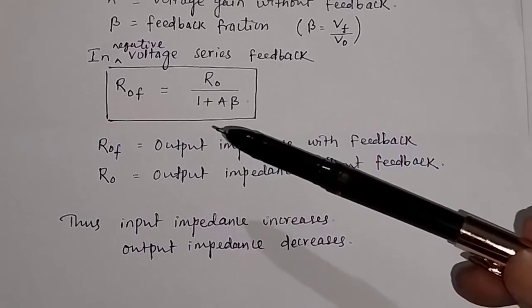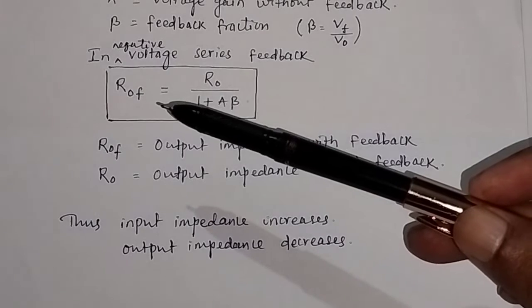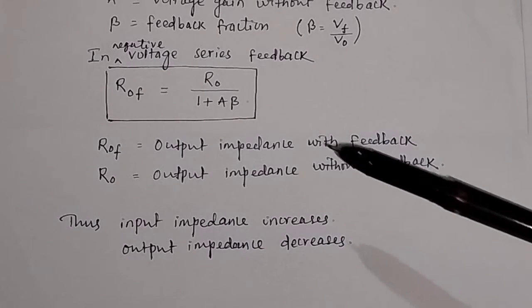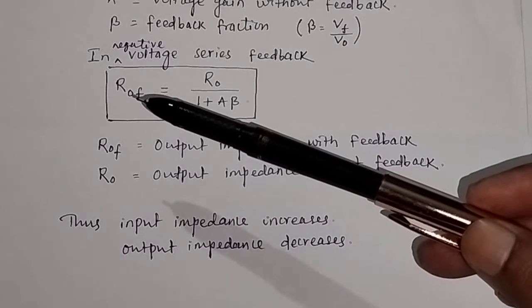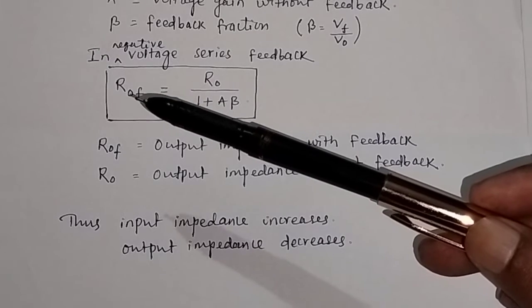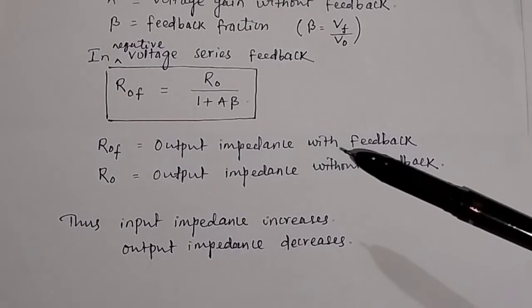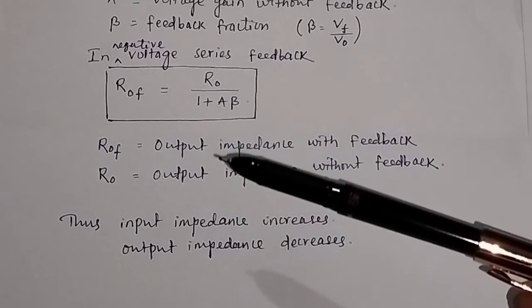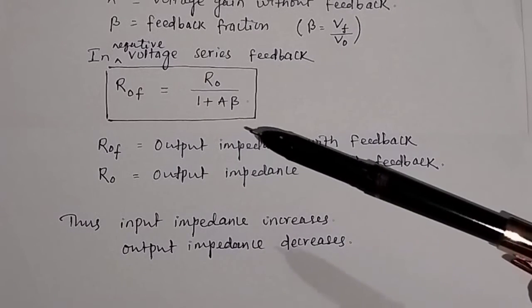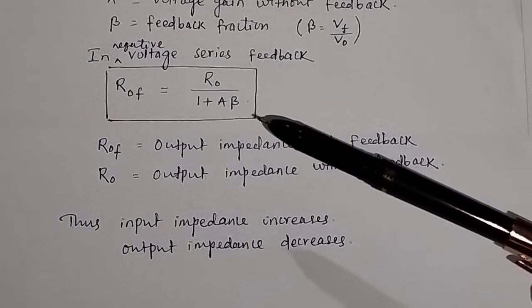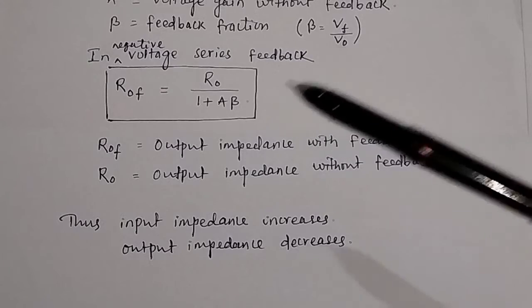The output impedance with feedback is equal to the output impedance Ro divided by (1 + Aβ). So in the case of voltage series feedback or series shunt feedback: the input impedance increases and the output impedance decreases.